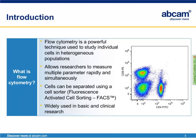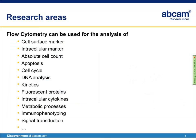For those of you who are not familiar with flow cytometry, what is it? Flow cytometry is a powerful technique used to study individual cells or particles in heterogeneous populations. It allows you to measure multiple parameters rapidly and simultaneously. Furthermore, cells can be separated using a cell sorter — this sub-discipline is often referred to as fluorescence activated cell sorting, or FACS for short.